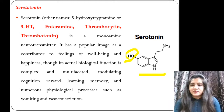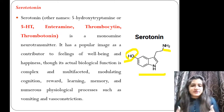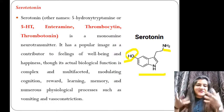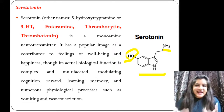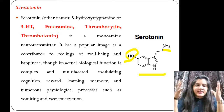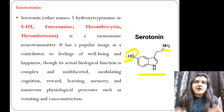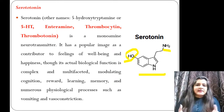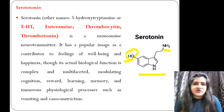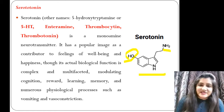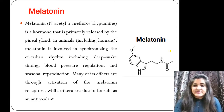Serotonin is a monoamine neurotransmitter. Its role includes creating feelings of well-being and happiness. Its actual biological function is complex and multifaceted — it increases learning capacity and memory. When you are happy you can grasp things more easily. It also controls numerous physiological processes such as vomiting and vasoconstriction.